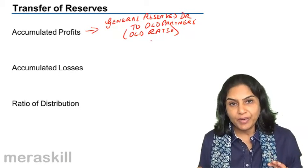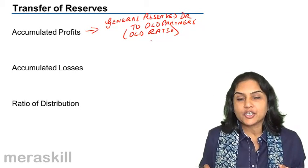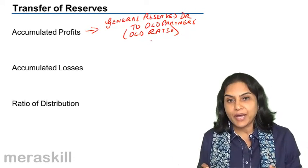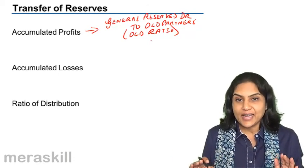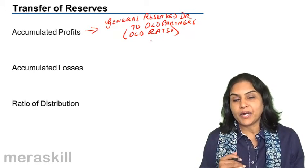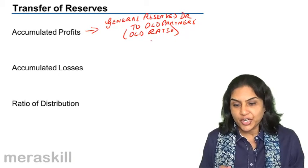Similarly, accumulated loss, debit balance of the profit and loss account shown on the asset side of the balance sheet, is not really an asset. It is a loss which should be borne by the old partners in the old profit sharing ratio.